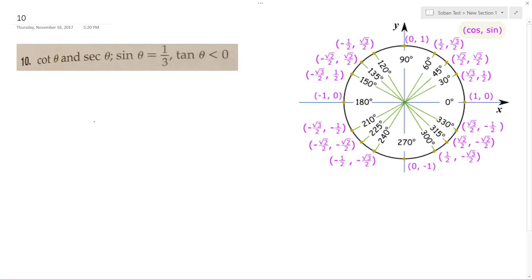So cotangent theta, secant theta, we want to find those based on the fact that the sine of theta is equal to 1 over 3 and tangent is less than 0.